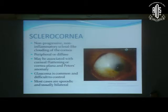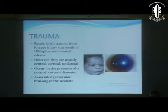Sclerocornea is a non-progressive, non-inflammatory scleral-like clouding of the cornea. It can be peripheral or diffuse, and may be associated with corneal flattening (cornea plana) and Peter's anomaly. Glaucoma is common and difficult to control. Most cases are sporadic and usually bilateral.